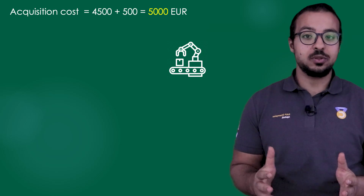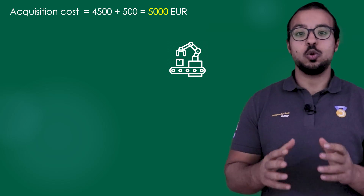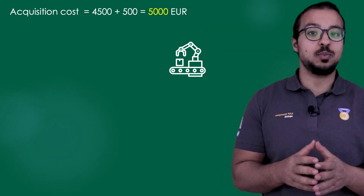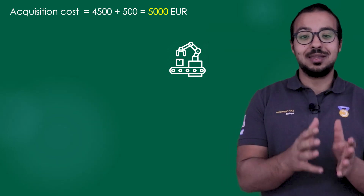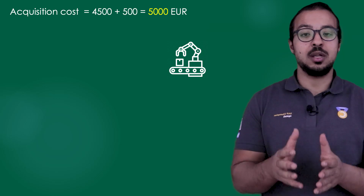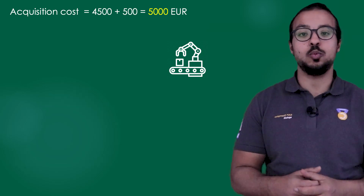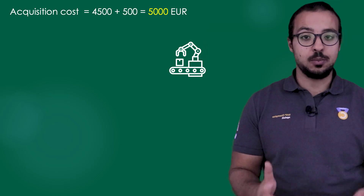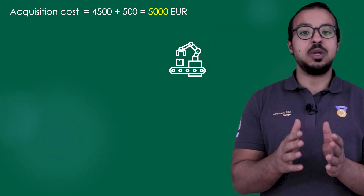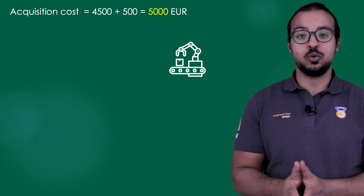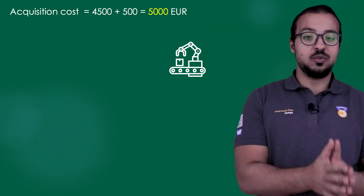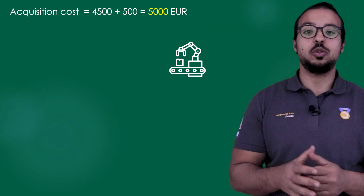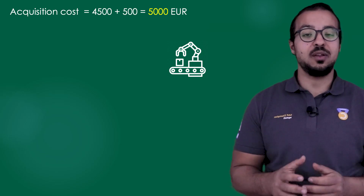The acquisition cost according to financial standards should include the price of the asset and any other expense that we spend in order to get this asset ready to be used in the production process or to start adding value to the company. In our example, the price is 4,500 and delivery and installation is 500, so the total acquisition and production cost is 5,000 euros.